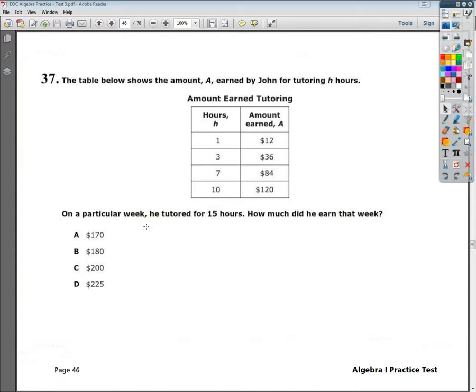Alright, this is the Algebra 1 Practice EOC, question number 37. I believe this is test 3. I mean, there are so many of them now, we kind of just lose track at this point. But question 37, it says, the table below shows the amount A earned by John for tutoring H hours. And they give you this fancy, cool little table here.